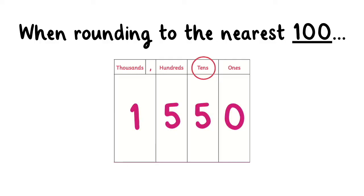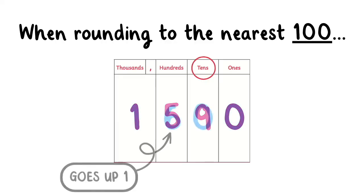If the tenths digit is 5, 6, 7, 8, or 9, then the hundredths digit goes up by one.